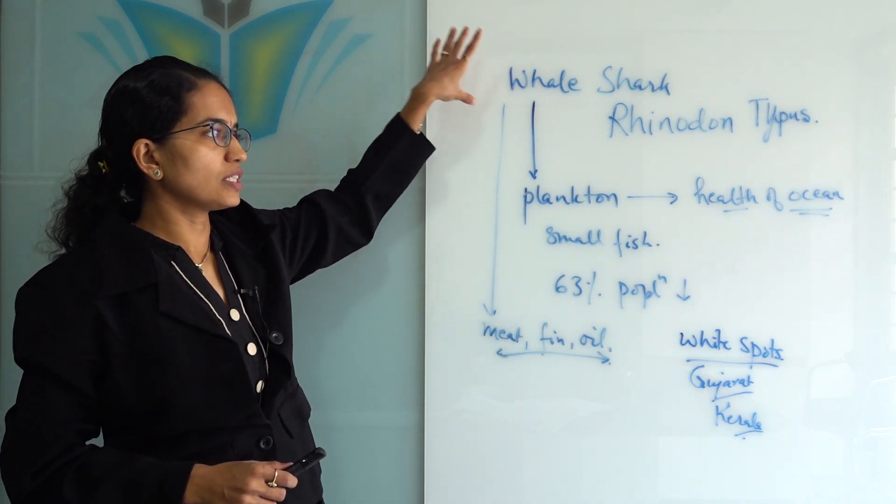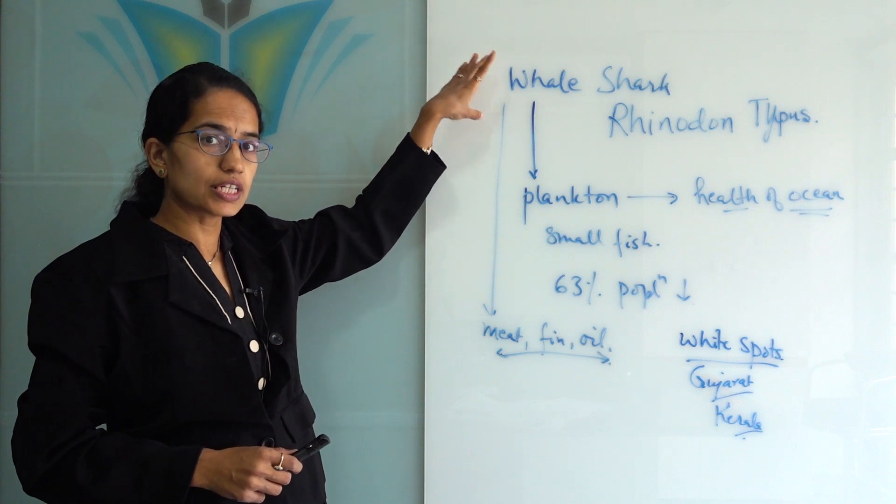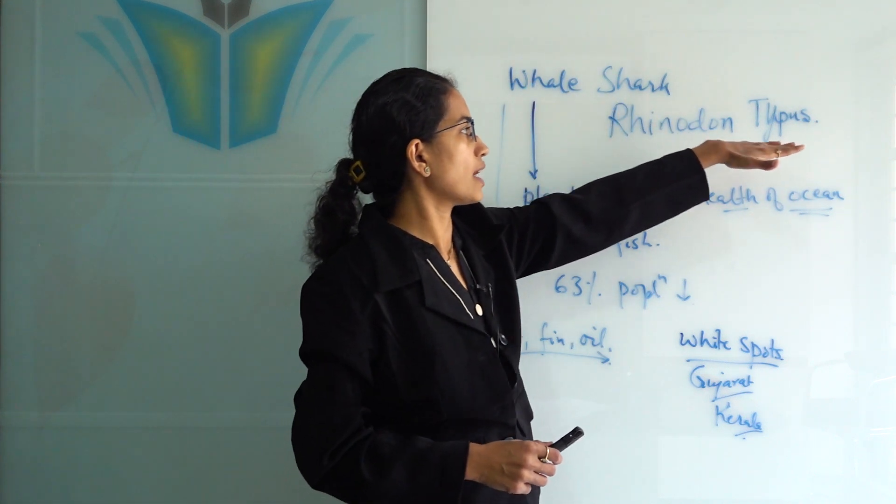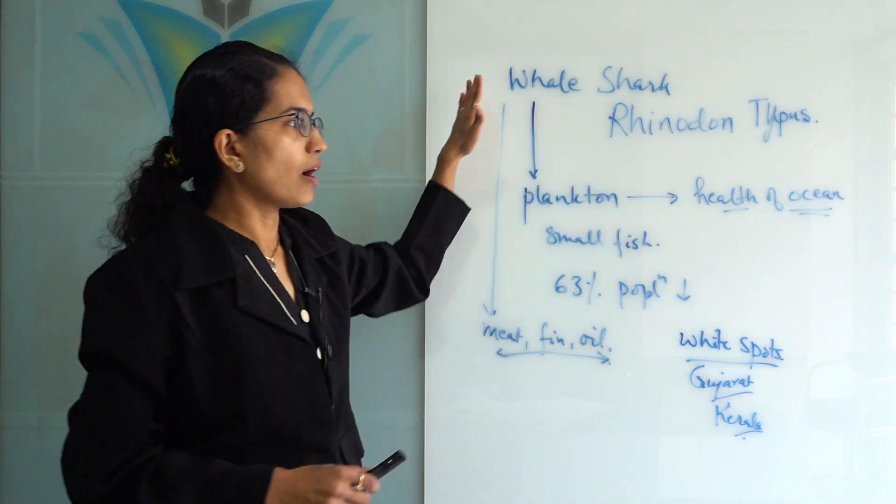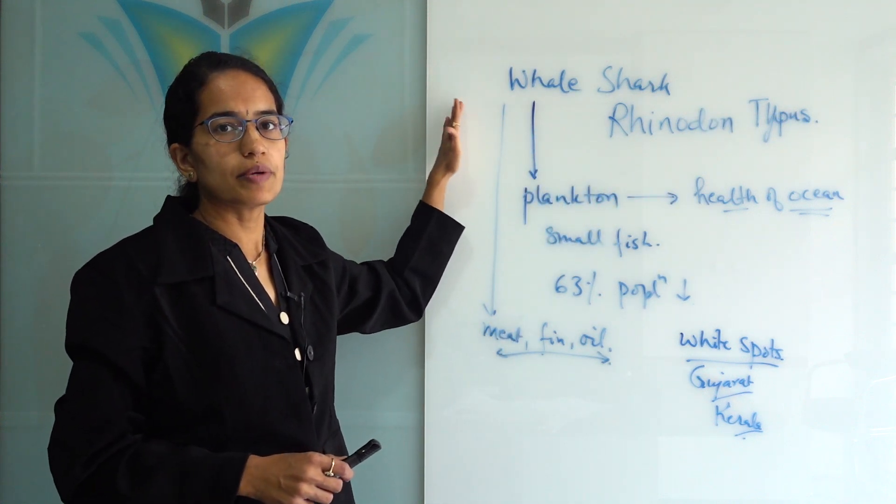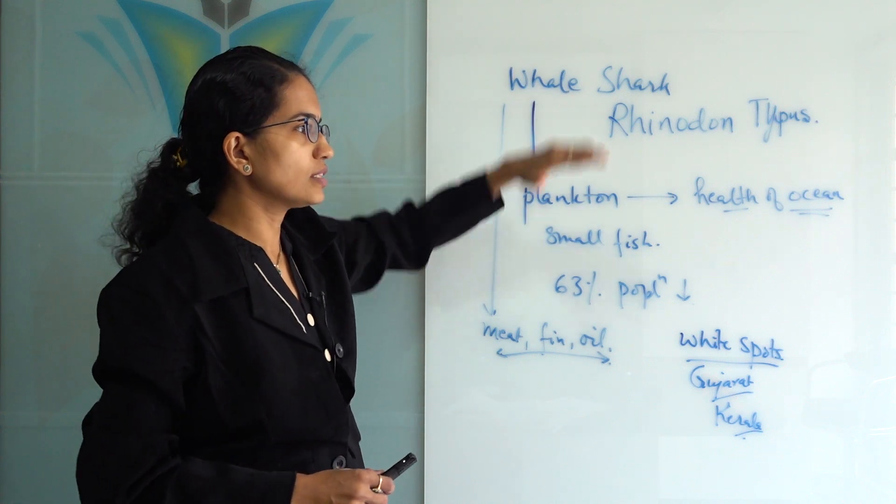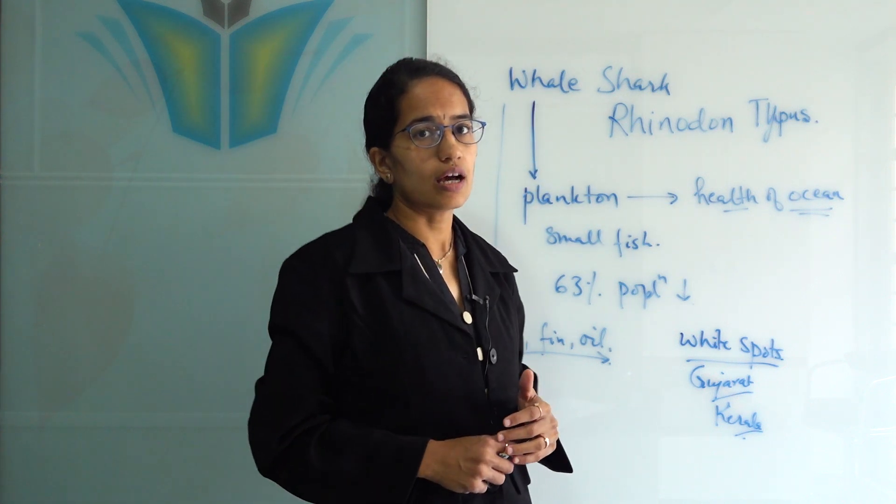This rare species is classified under the endangered IUCN classification and is also known as Rhinodon typus. This is about the species, and we will be covering most of the related topics on such unique species in upcoming lectures.